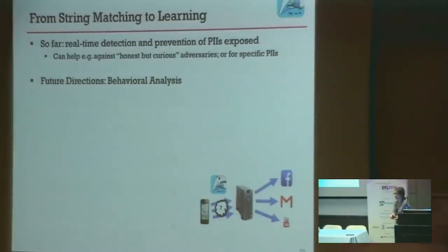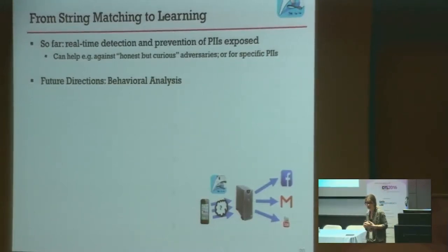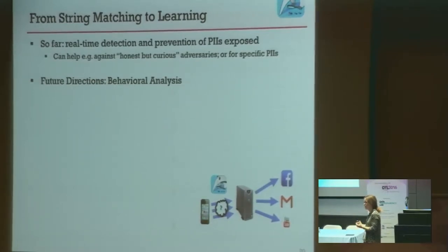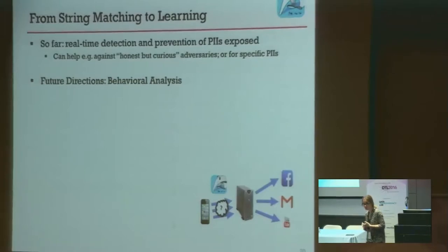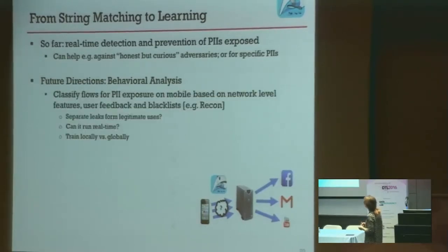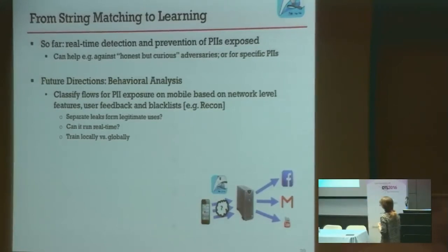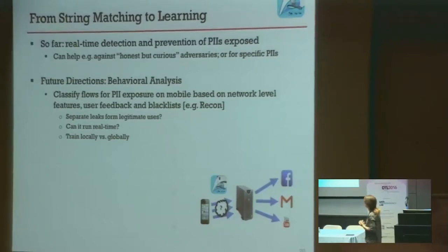Where do we go from here? So far we have a tool with real-time detection and prevention — if you give it a string, you can see if it goes out. That's useful if you know what you're looking for and you have an honest-but-curious adversary. The interesting next step is more behavioral analysis: an automated way to classify flows that expose PII, based on network-level features, and using user feedback and blacklists.